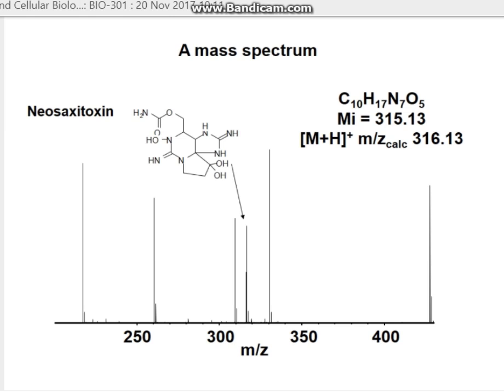The two axes of a mass spectrum are mass to charge, and relative abundance of the ions. In this example, we're looking at a marine toxin, neosaxitoxin.